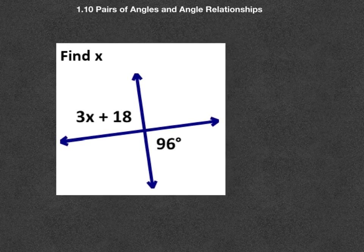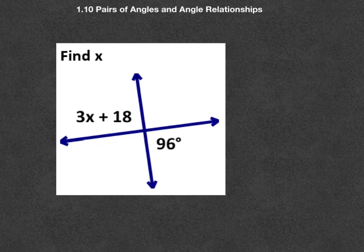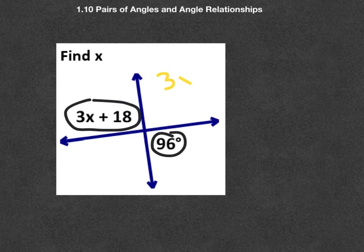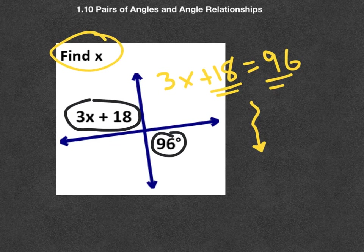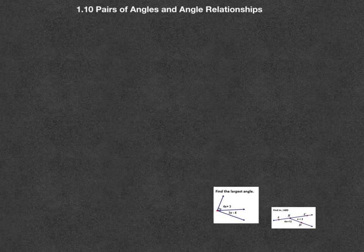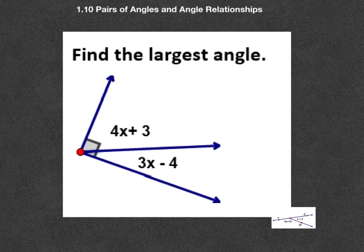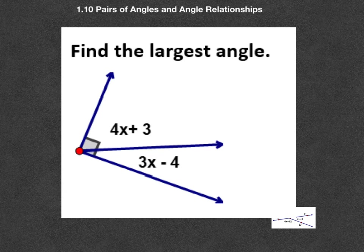Similarly here, these are also vertical angles. And we know that vertical angles must be equal to each other. So we would say something like 3x plus 18 equals 96. And then you would go through the solving process to find x.